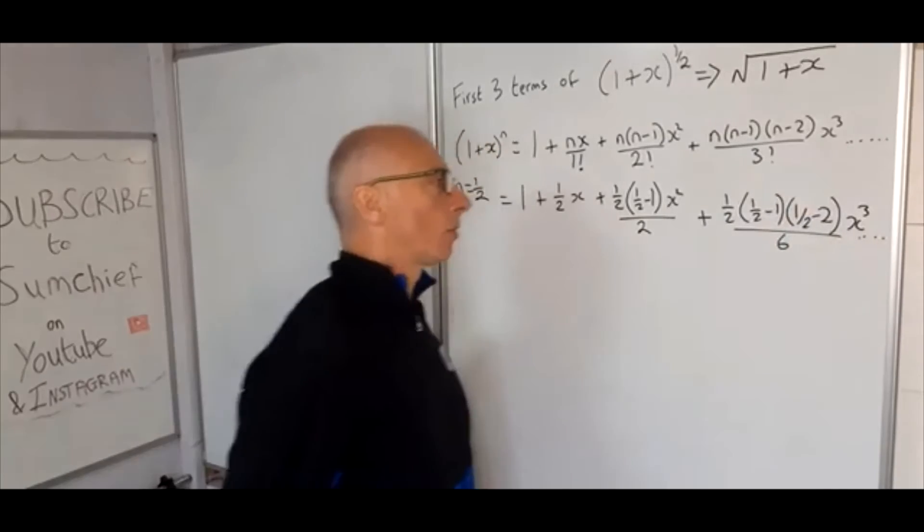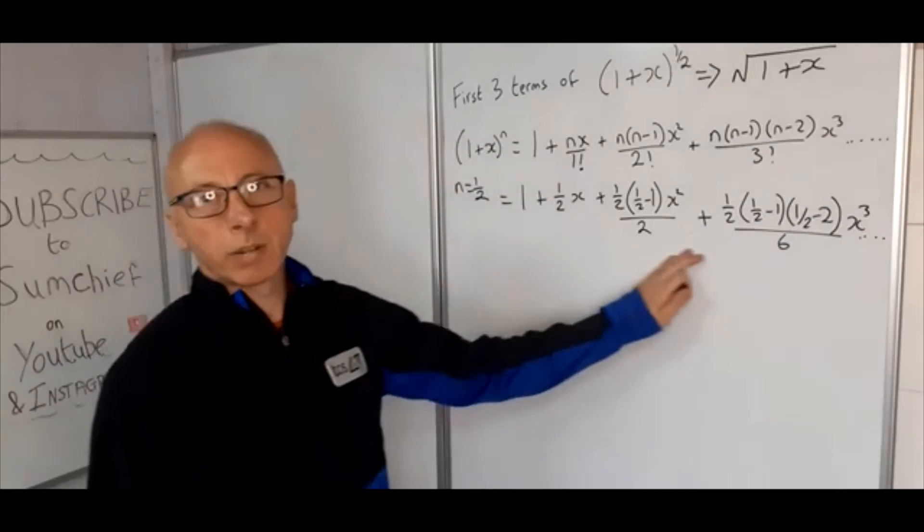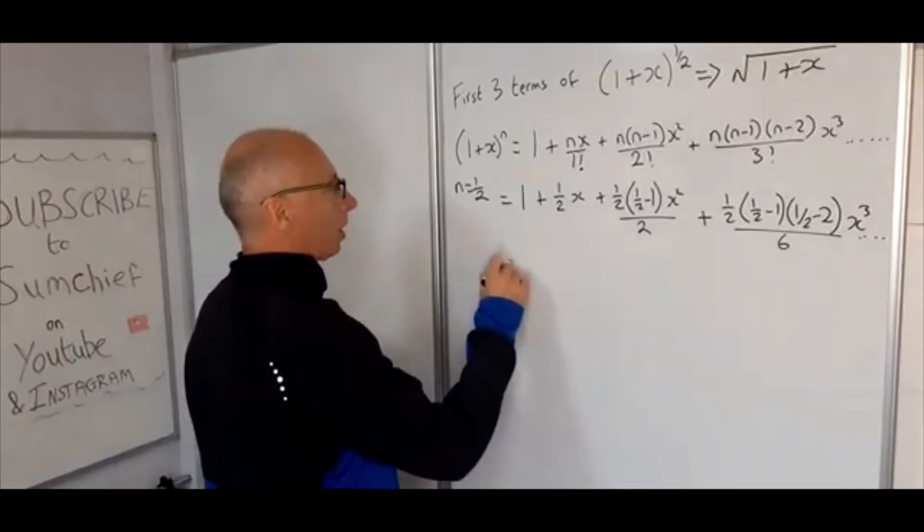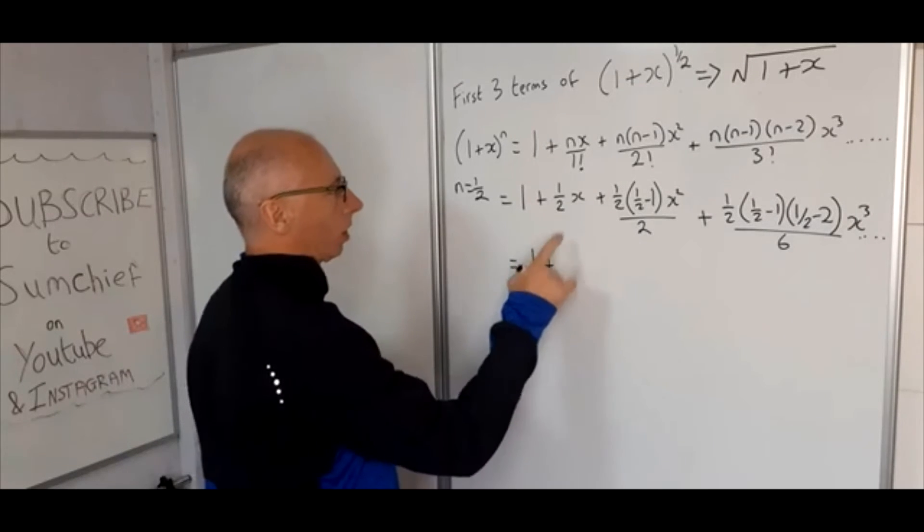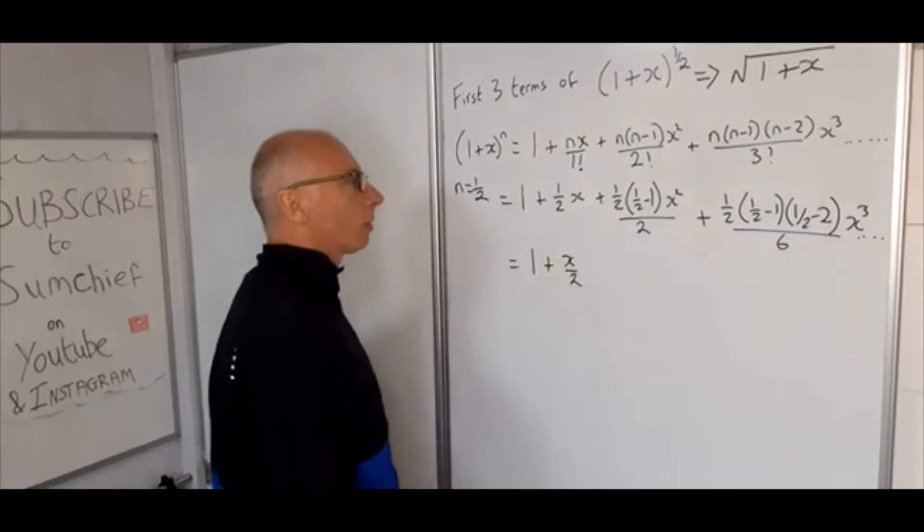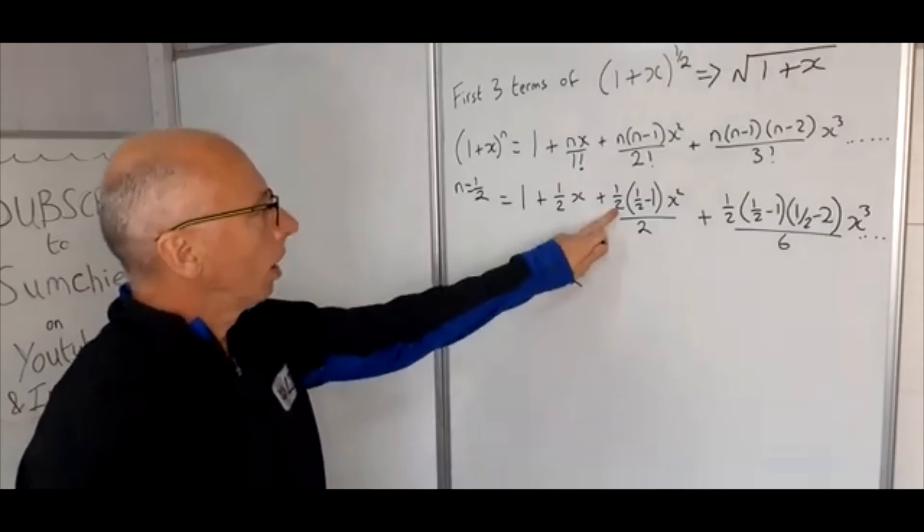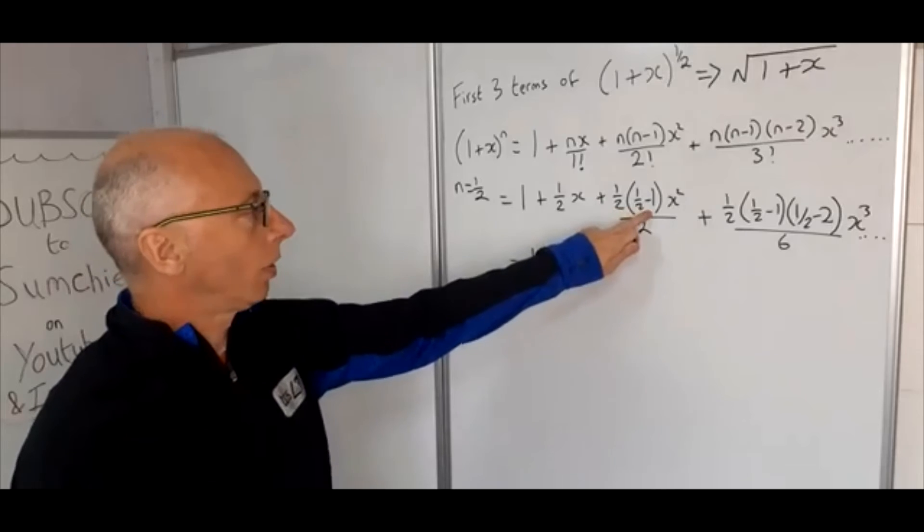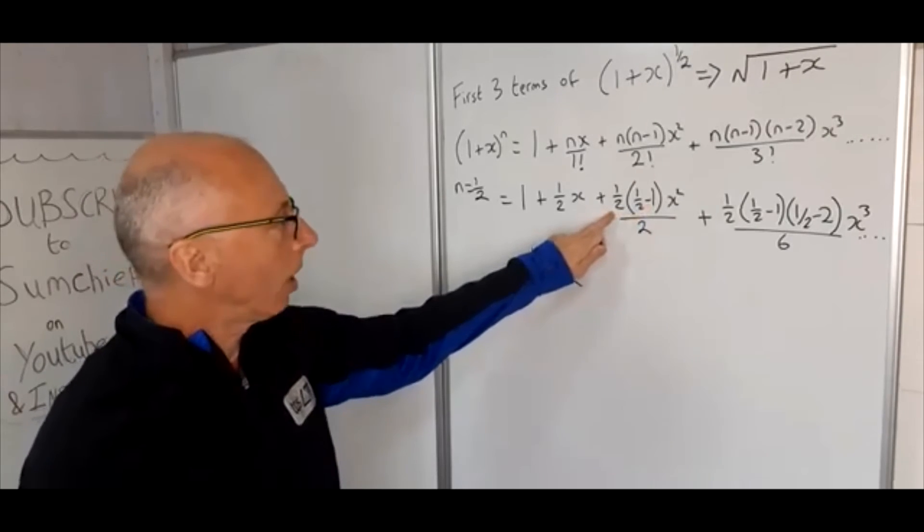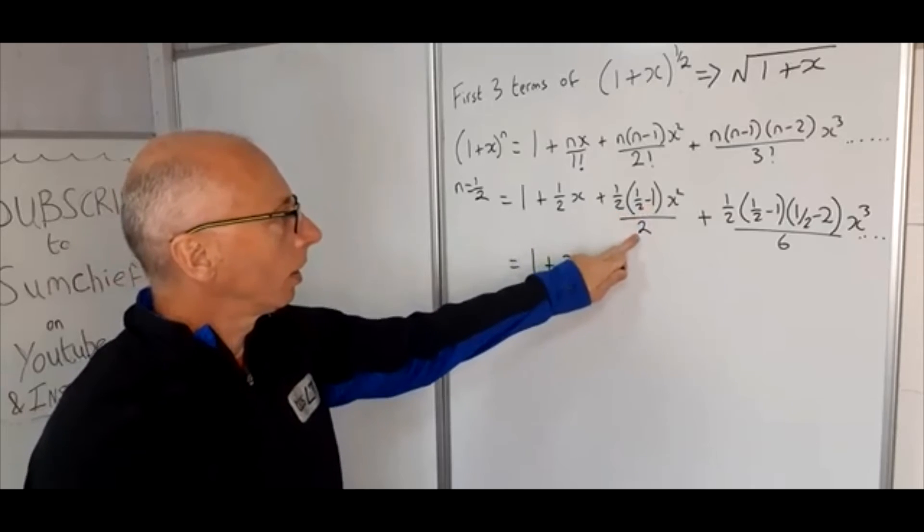And again this continues forever. So what we're going to do now is just simplify this and that will give us our answer. So equals 1 plus half of x, we can write that as x over 2. Half times (a half minus 1): half minus 1 is minus a half, times that by a half is minus a quarter, divided by 2 is minus one-eighth.